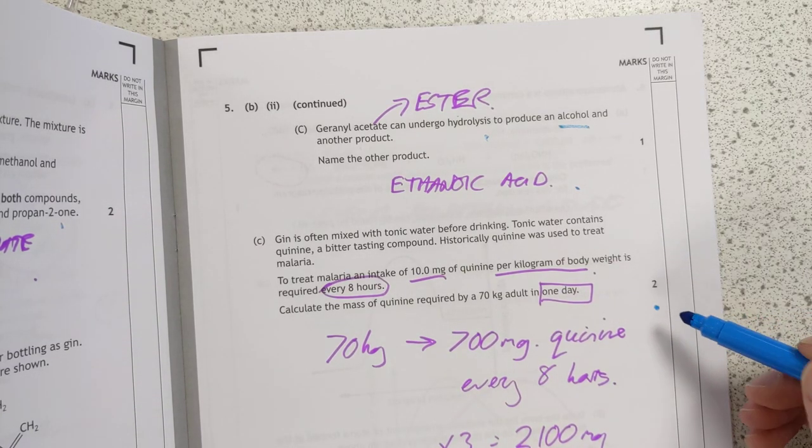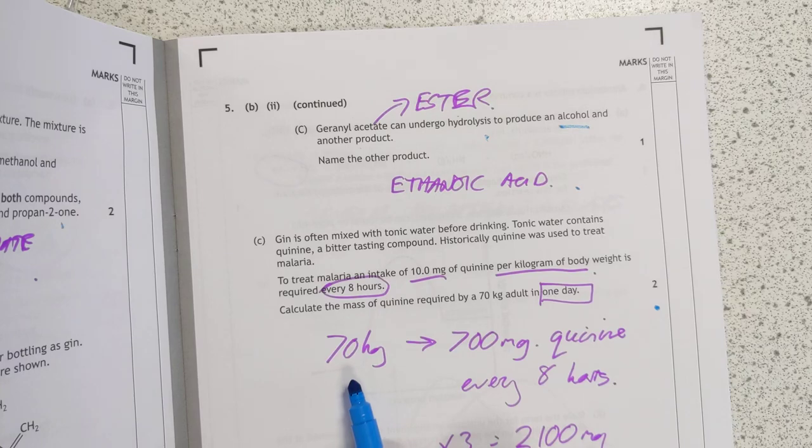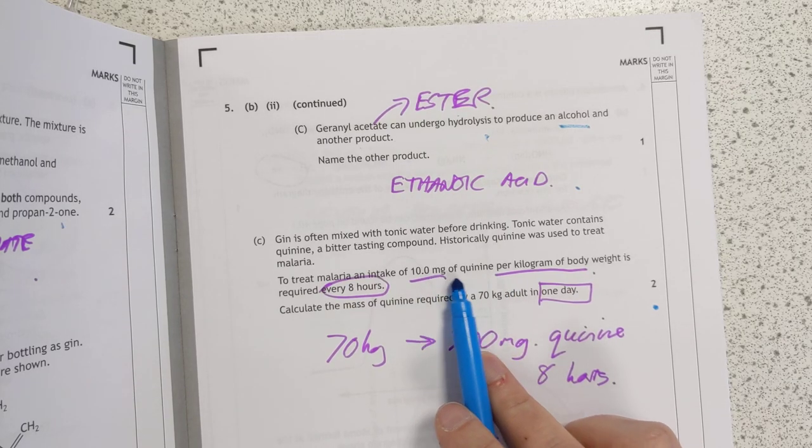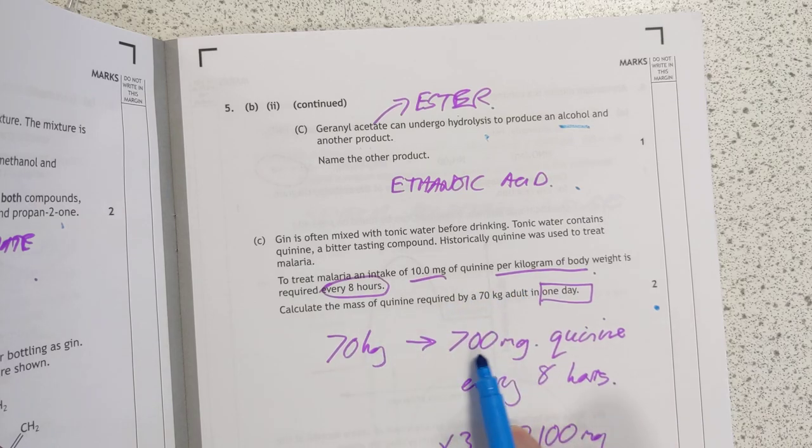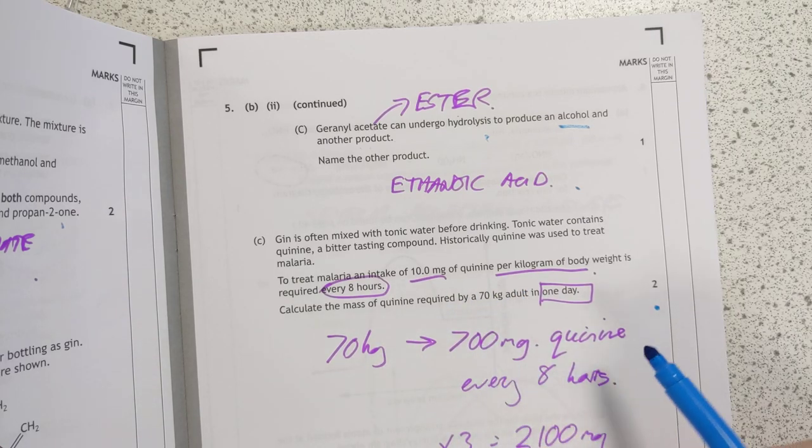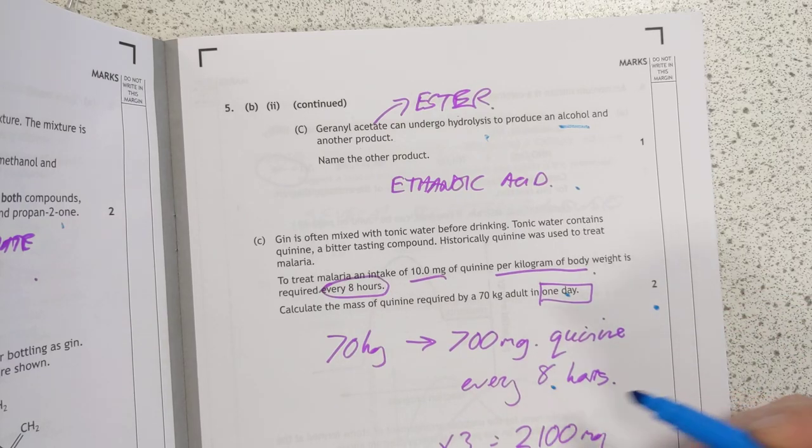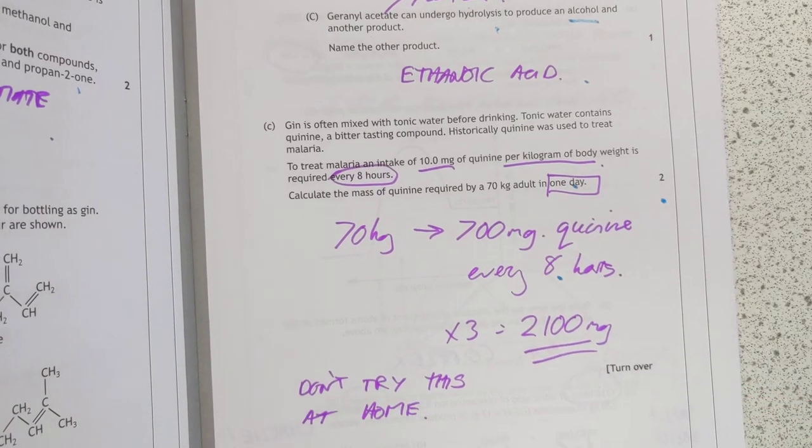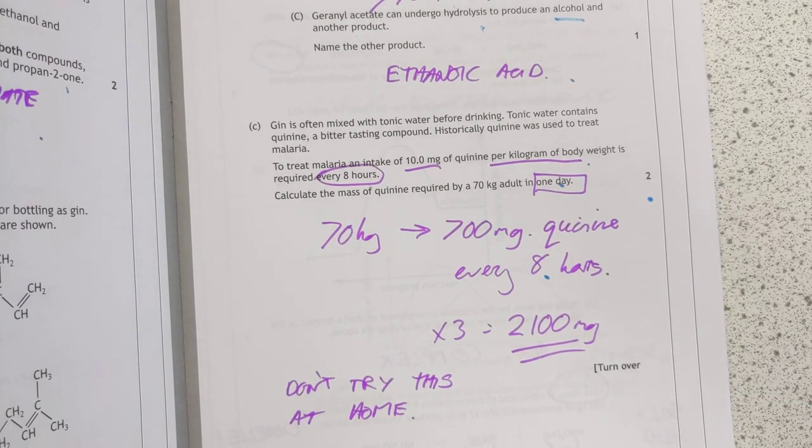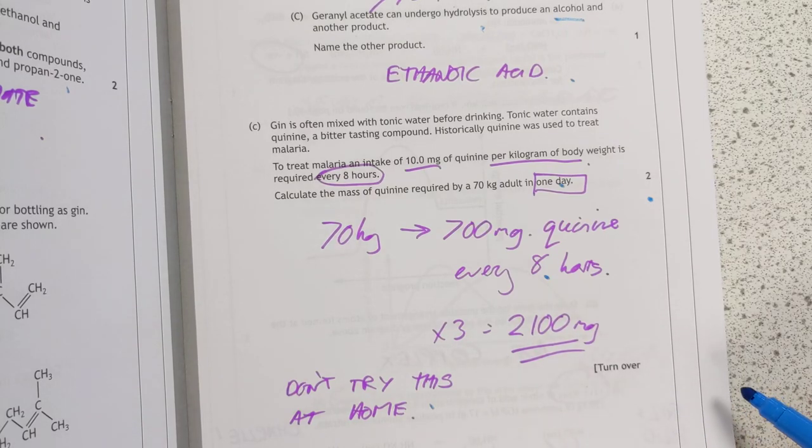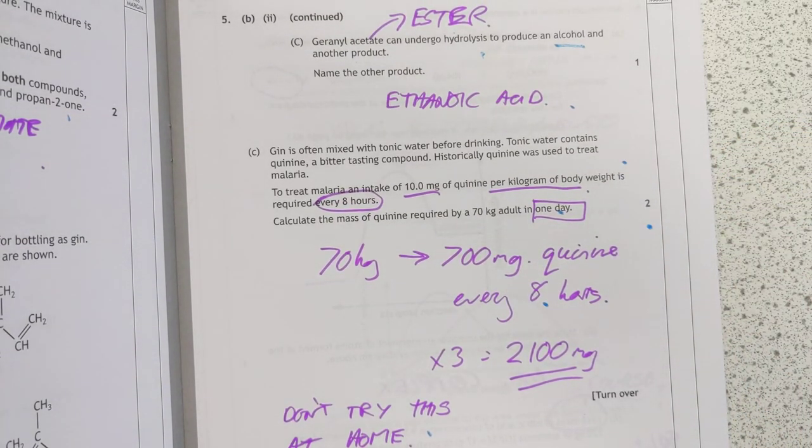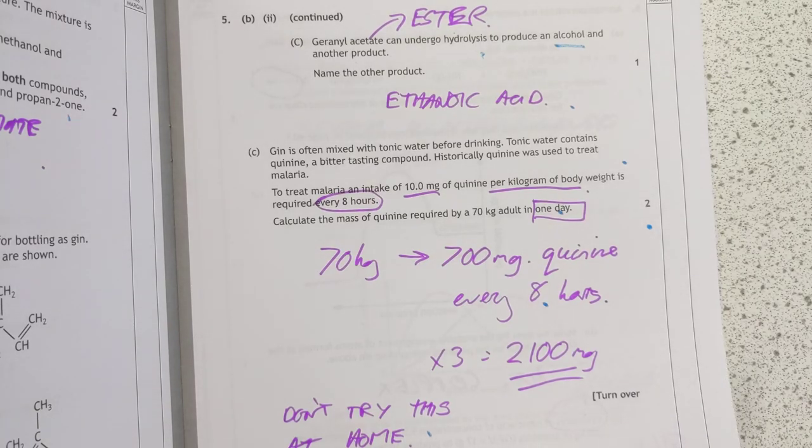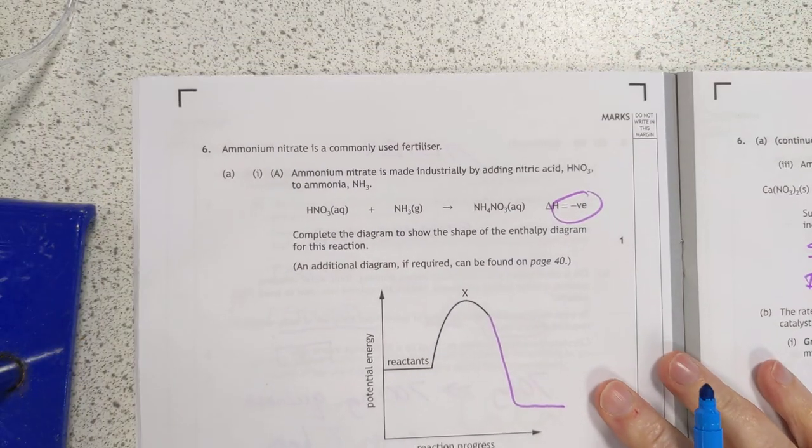Back of a beer mat calculation here, proportion ones. 70 kilograms will require 700 milligrams. Where did I get that from? Because 10 milligrams are required for one kilogram. So 70 kilograms will require 700 milligrams. They want one day and that's in every eight hours. So therefore multiply it by three. You'll need 2,100 milligrams of quinine in a day. Don't try that at home. My grandfather apparently used to drink quinine. He got malaria during his service in World War I. There are much better alternatives nowadays than quinine.